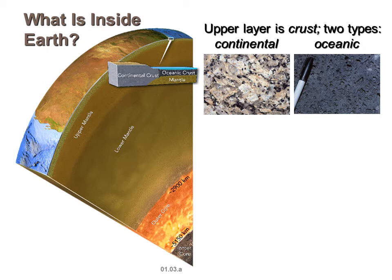We live on the continental crust, which is much thicker and sits higher than the oceanic crust — that's why we're above sea level. They're made of very different rocks. A rock from the continental crust has big crystals and is mostly light colored, whereas oceanic rock is very dark with little holes in it. What we're looking at is a felsic rock for the continental crust and a mafic rock for the oceanic crust — terms that refer to rock composition. If it's light colored, we call it felsic; if it's dark colored, we call it mafic.